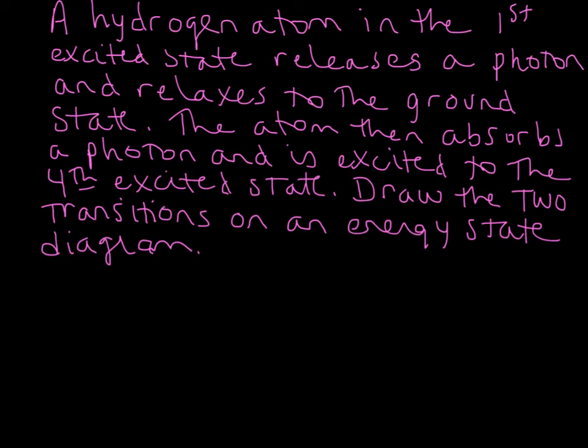This is a conceptual problem regarding a hydrogen atom that is either emitting or absorbing photons and visiting various energy states. We're going to look at two transitions, identify the n levels and energy levels in terms of principal quantum number n, and then draw the two transitions on an energy state diagram.